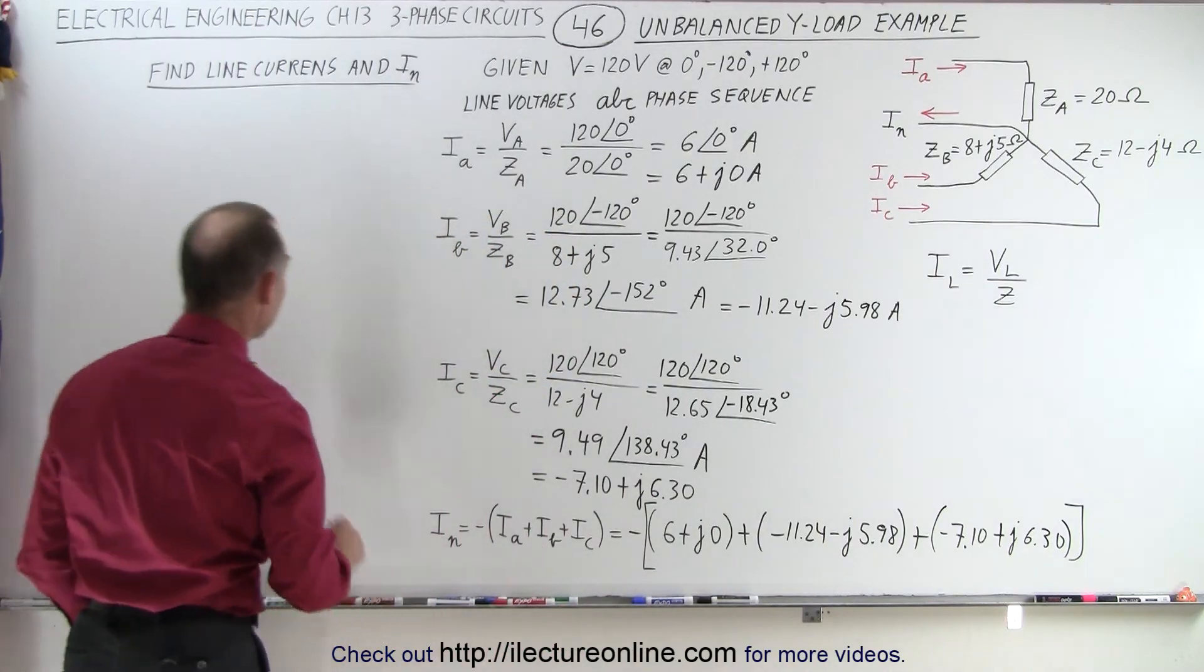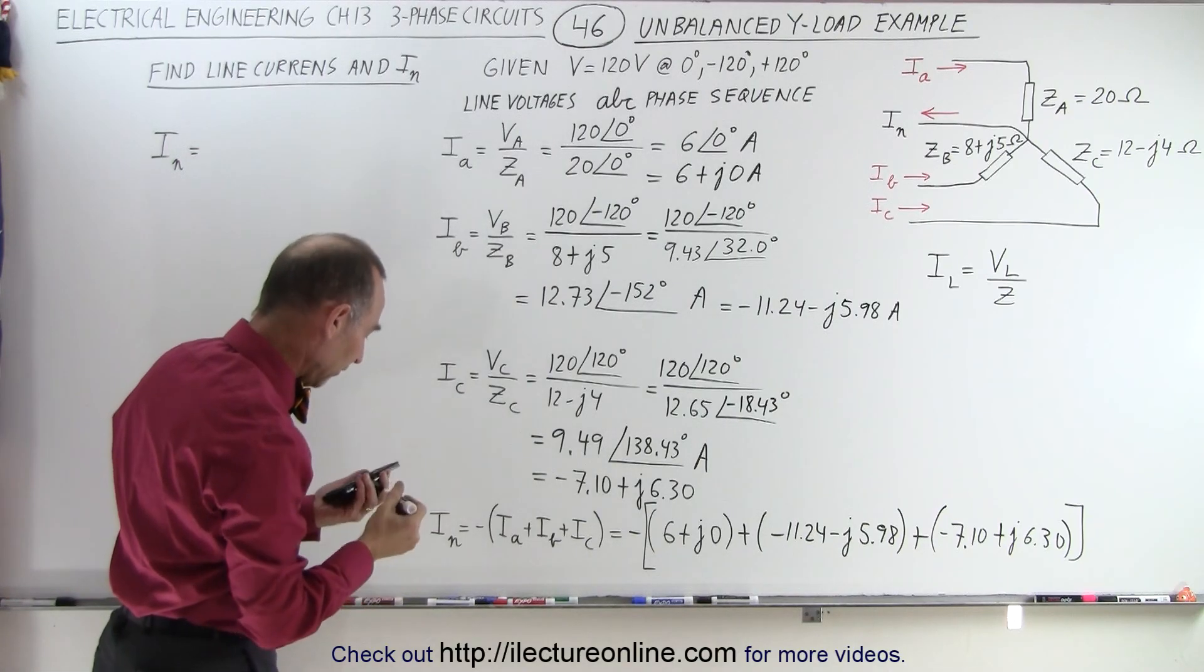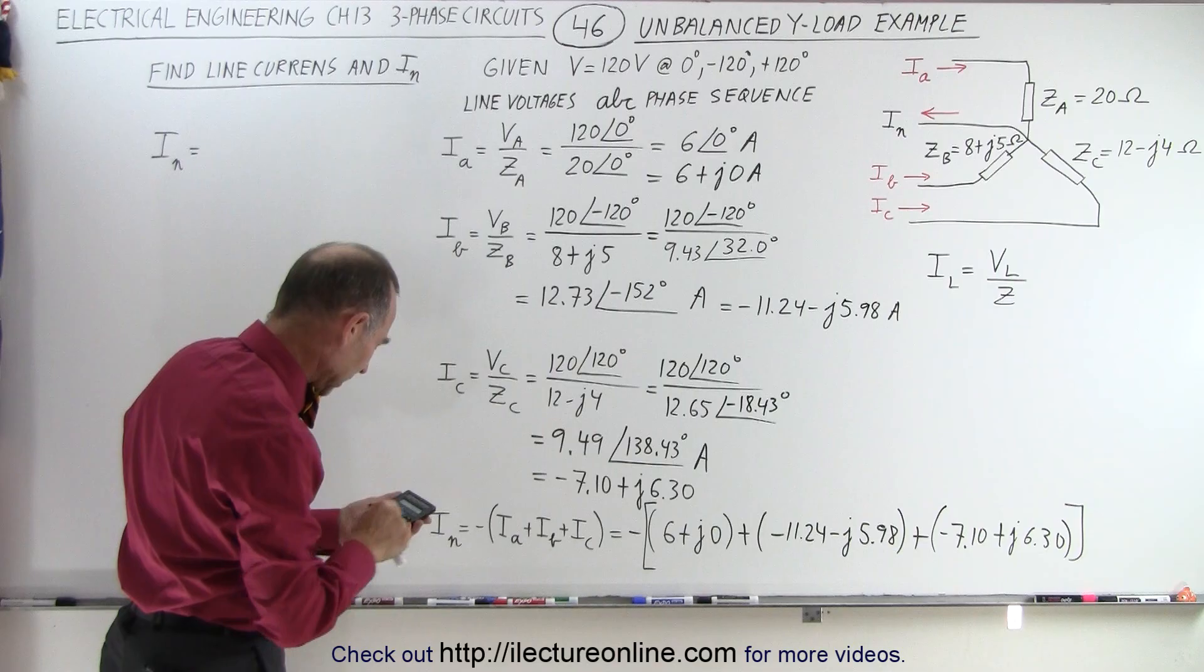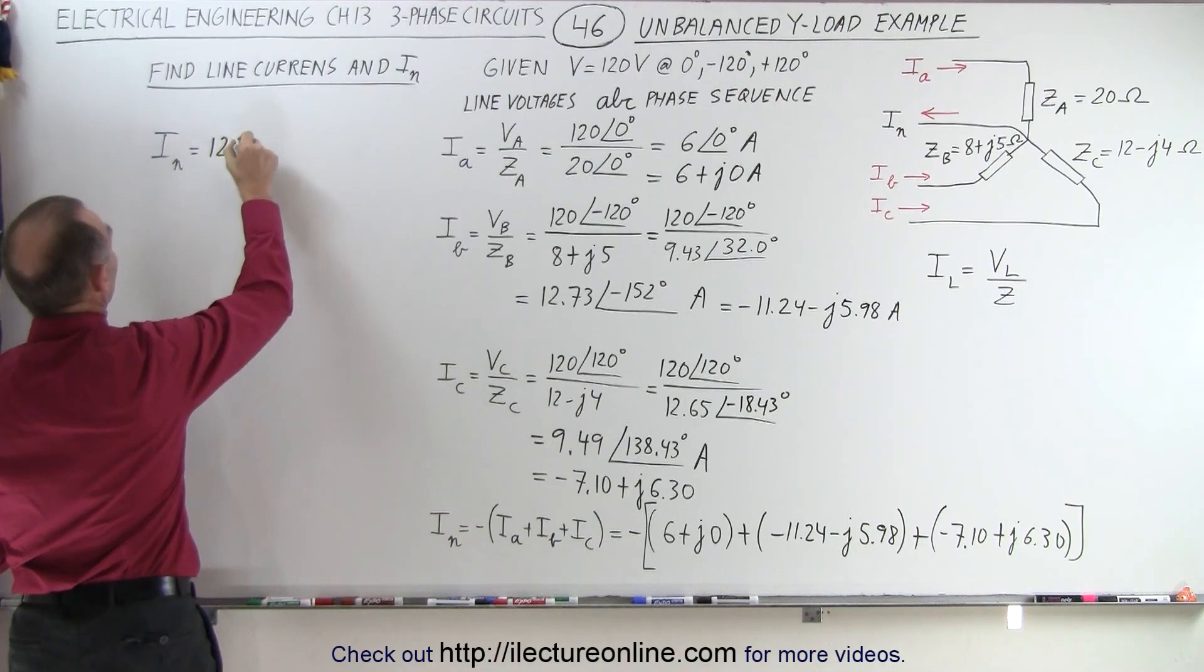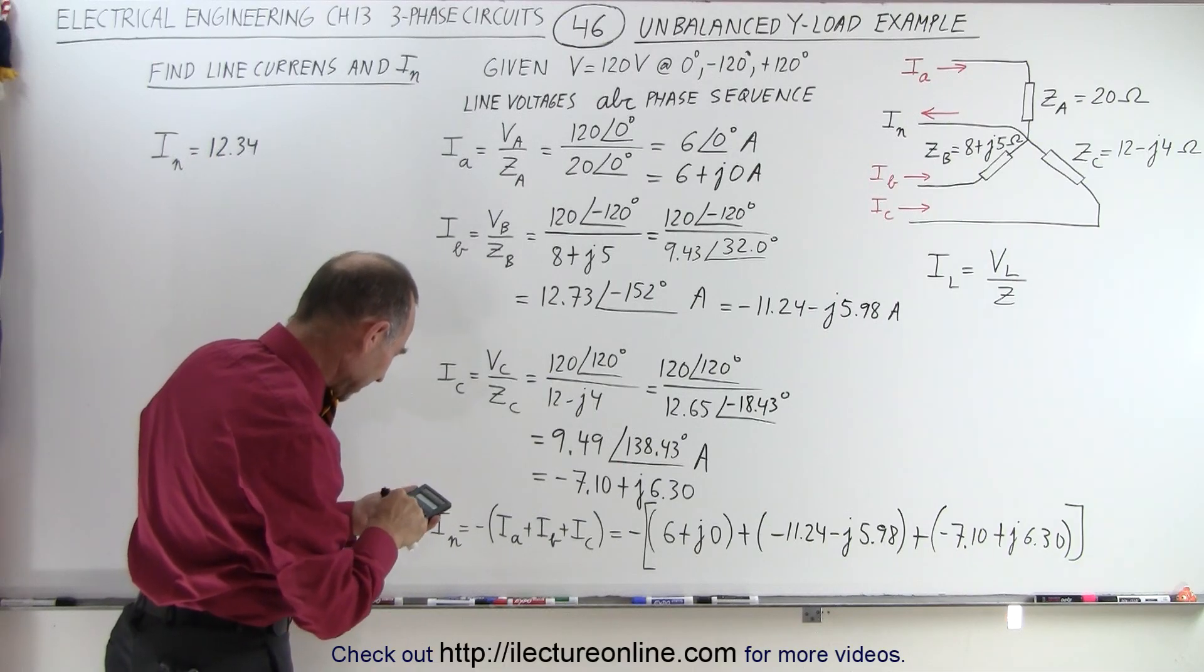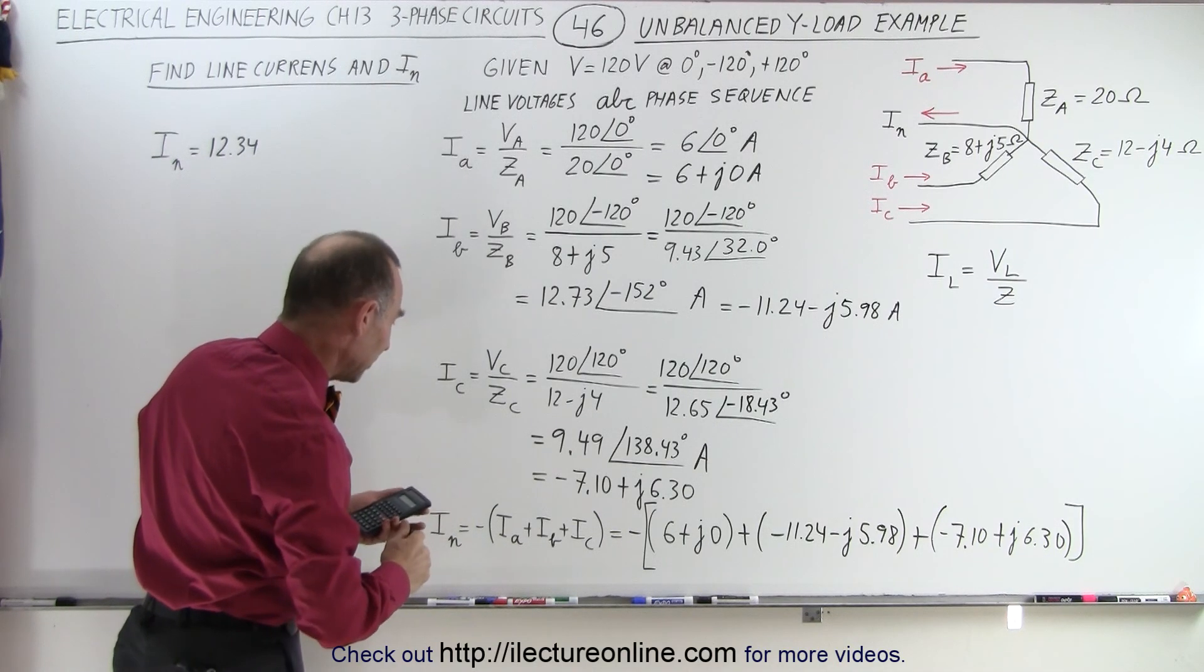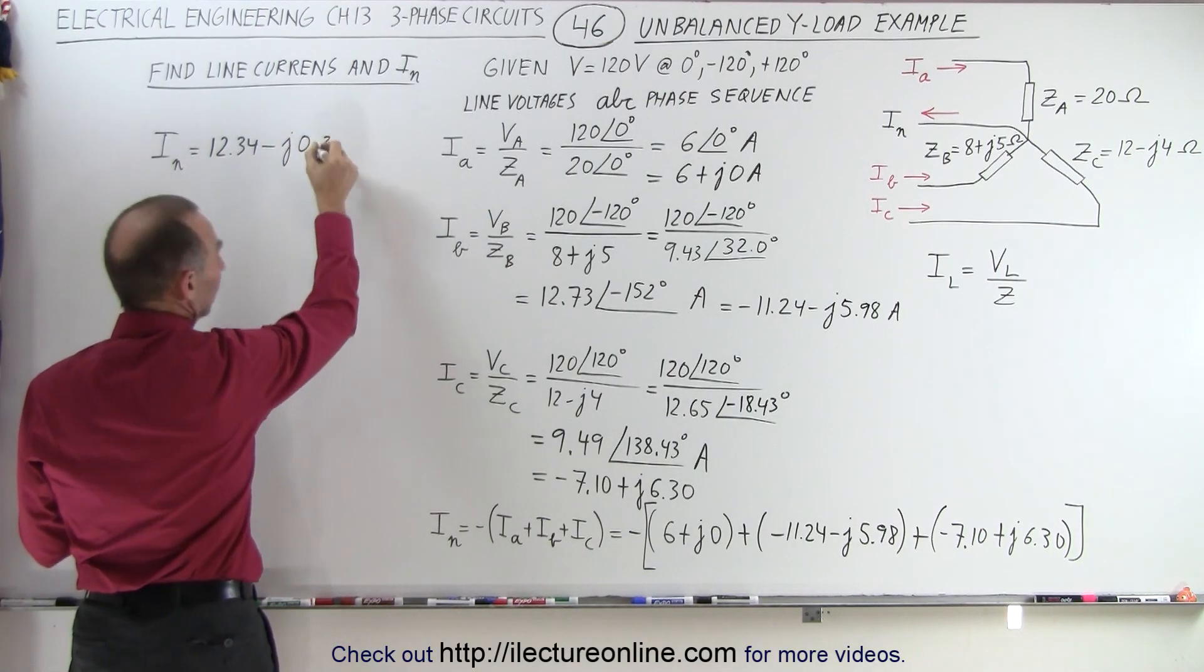There we go. So, we add up all three currents, and that means that I sub N will have a real part of, we have 6 minus 11.24, minus 7.1, and then with a minus in front, that converts that to a positive 12.34. And for the imaginary part, we have a 5.98, that's negative, and we have a plus 6.3, and we make that into a negative. That would be a minus J 0.32.